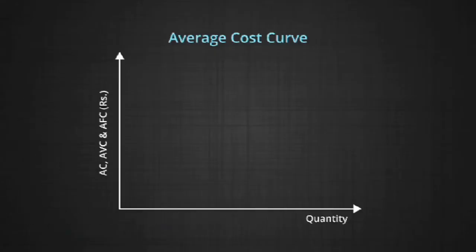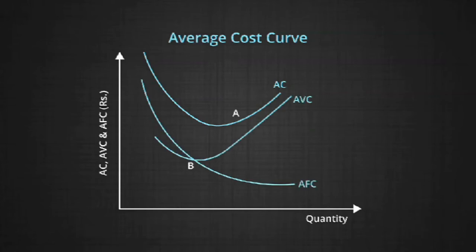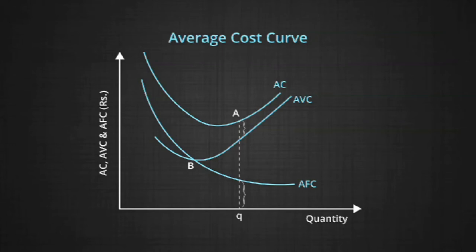Now let us talk about the average cost curve. In the short run, average cost is a U-shaped curve — that is, it falls to a point and then begins to rise, as you can see in the figure. This is because of the law of variable returns to a factor. The minimum point of AVC is at point B, which is before the minimum point of ATC at point A. AC is the sum of AFC and AVC. As output increases, the difference between ATC and AVC goes on decreasing because the AFC keeps declining.